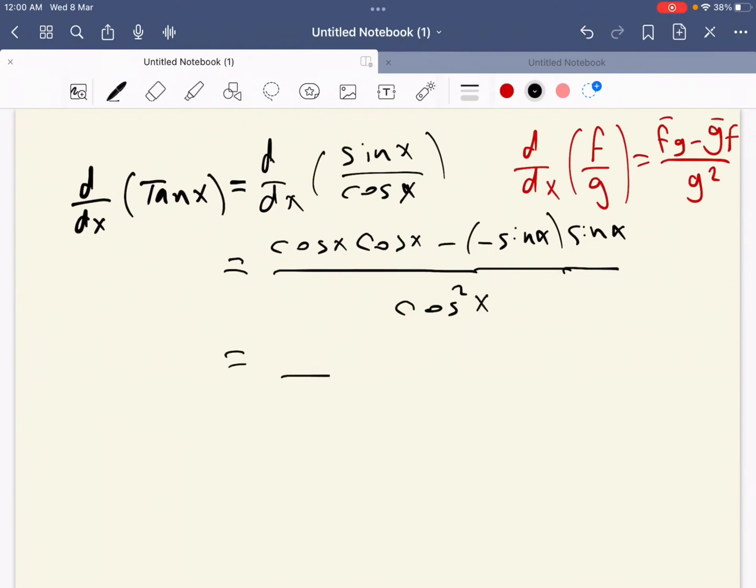We can write cosine times cosine as cosine squared of x. Minus times minus will be positive, so it becomes sine squared of x over cosine squared of x.